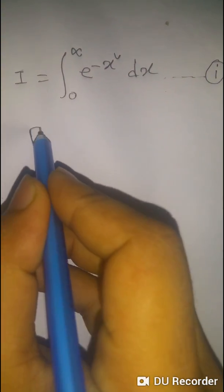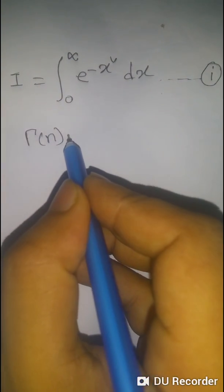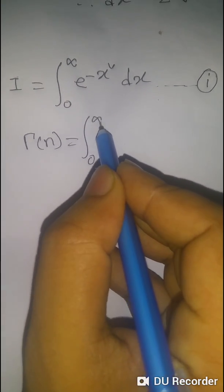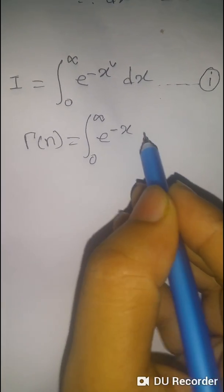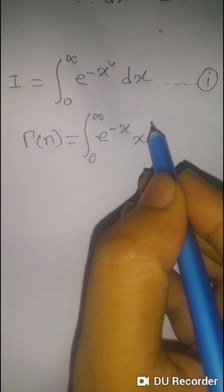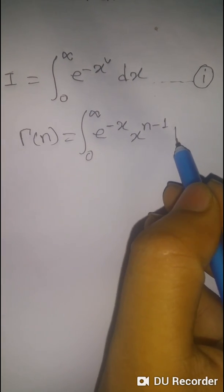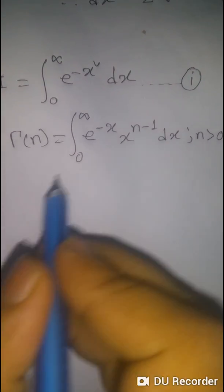We know the gamma function gamma of n is equal to the integral from 0 to infinity of e to the power negative x times x to the power n minus 1 dx, where n is always greater than 0.